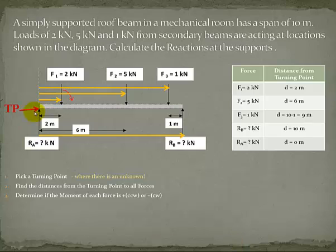So for my force 1, since it's pushing down, it's going to want to tend to turn the beam this way, which is the clockwise direction. Force 2 and 3 are also pushing down, so they're also going to be in the clockwise direction. But then my reaction B is pushing up, so it's going to be pointing in the counterclockwise direction.